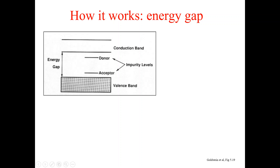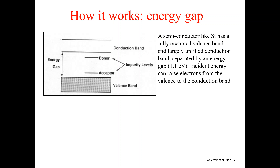Just like we mentioned in the previous lecture, the most common type of EDS detector is the silicon-lithium detector, which means it is mostly a semiconductor detector. Semiconductors like silicon have a fully occupied valence band and a largely unfilled conduction band, separated by an energy gap that is equal to 1.1 electron volt. Incident energy can raise electrons from the valence band to the conduction band.